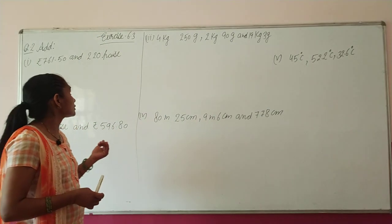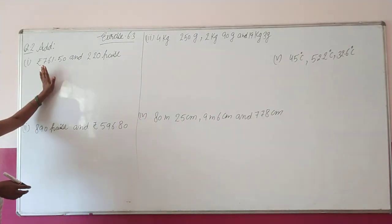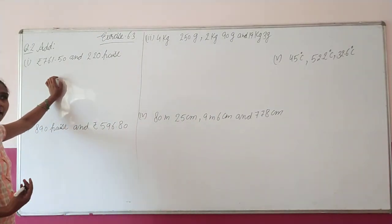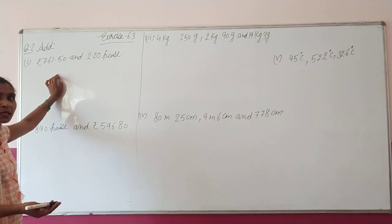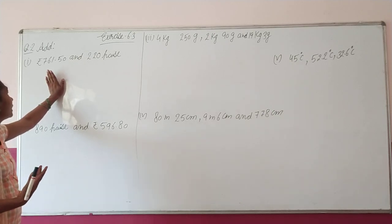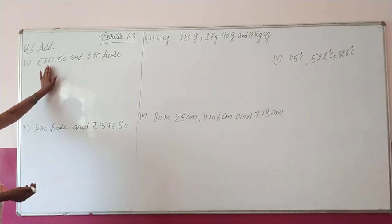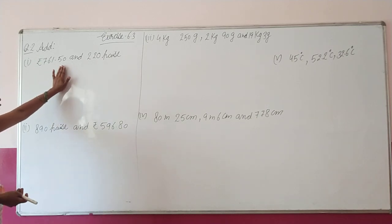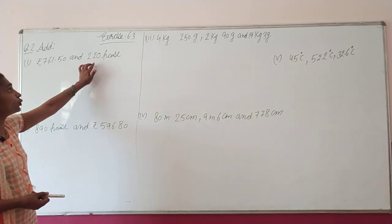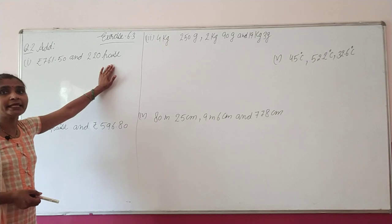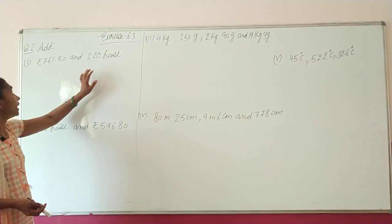Next question — what is our second question? In the first question there was addition. In this question also, what do we have to do? We have to add. What is the statement? Rupees 761.50 paise and 220 paise — we have to add these.